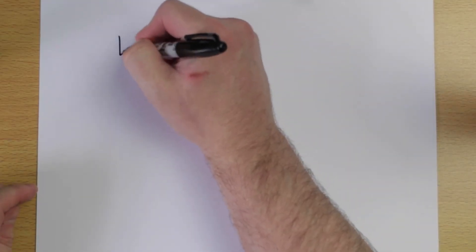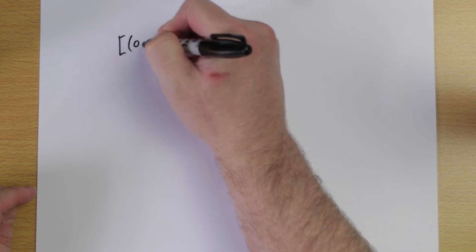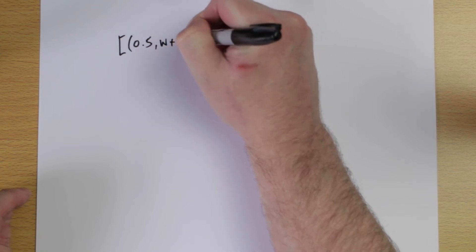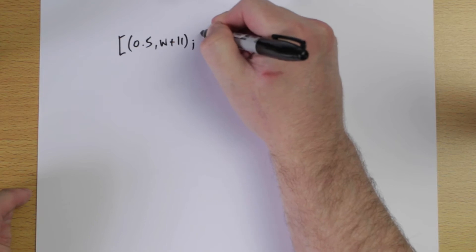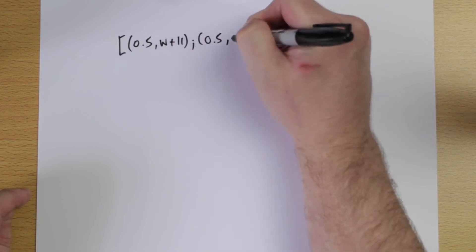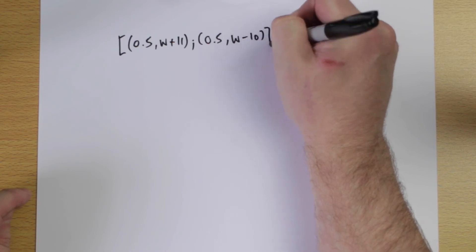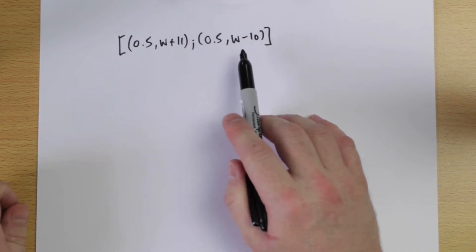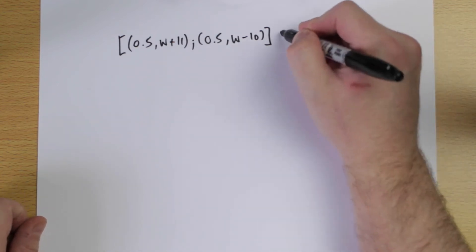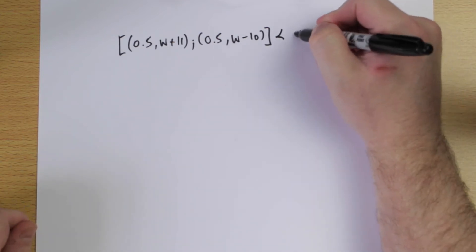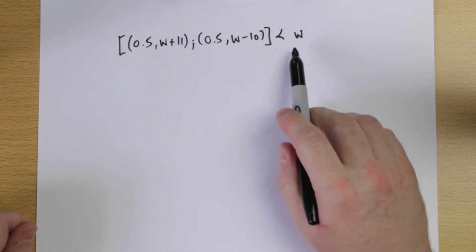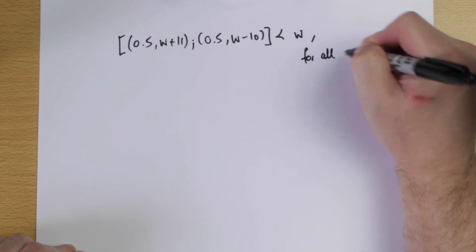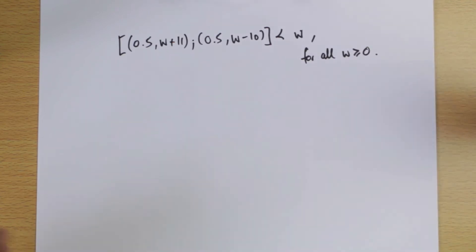Let's analyse this preference condition a little more. The starting point, which we think is fairly reasonable, is that the decision maker turns down all 50-50 gambles where they might win £11 or lose £10. So that's this lottery: a 0.5 chance of wealth plus 11 or a 0.5 chance of wealth minus 10. And this is considered worse than simply keeping your wealth — wealth with probability 1 — and this is true for all W non-negative.